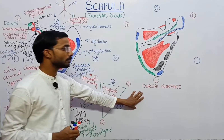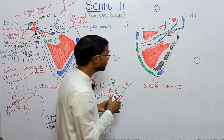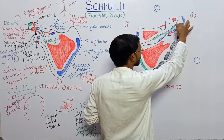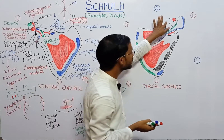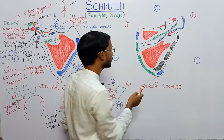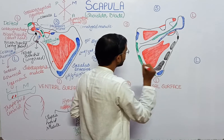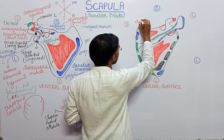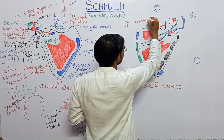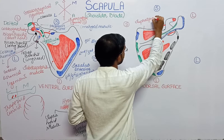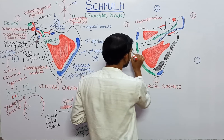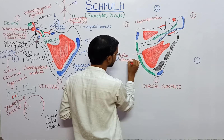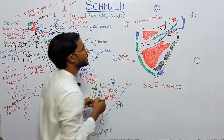Now we will discuss what muscles and ligaments attach to the dorsal surface. The spine of the scapula ends at the acromion process, and the coracoid process is also visible. The spine divides the scapula into two parts: supra and infra. The supraspinatus muscle occupies the supra region, and the infraspinatus muscle occupies the infra region.